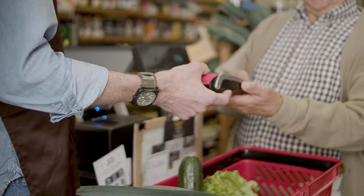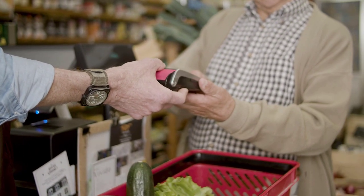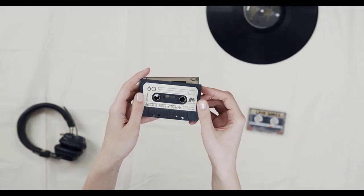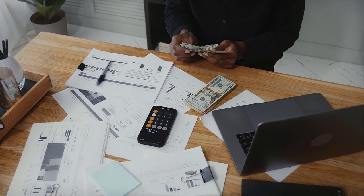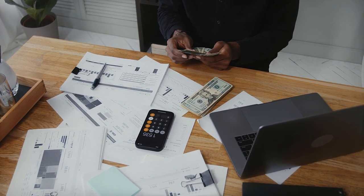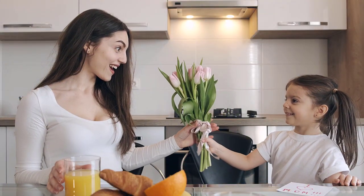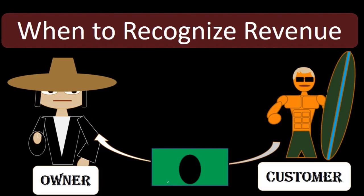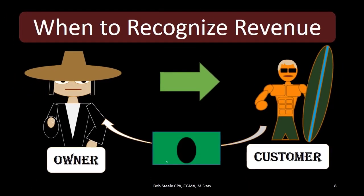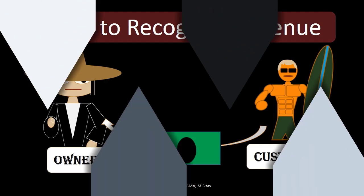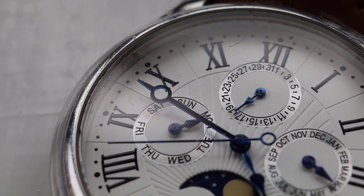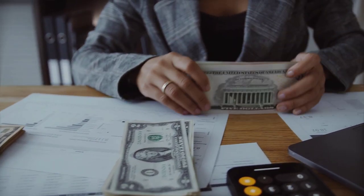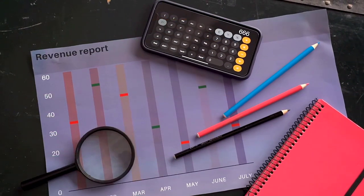We record revenue and the accounts receivable asset on the books. No cash has yet been received. Then, at a later point in time, we expect to receive cash — probably in the form of a check in the mail from the customer. At that point, we will not record revenue again even though cash has been received, because the revenue has already been recorded when the work was done.